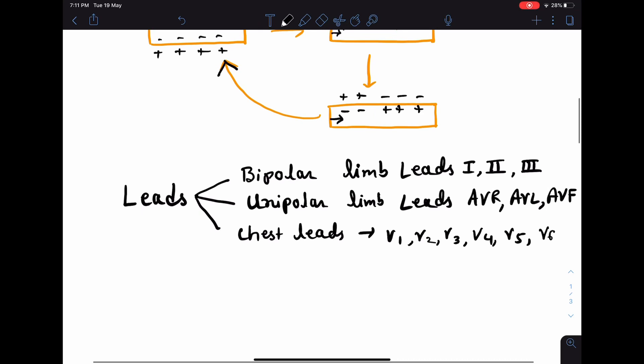Now regarding the leads, there are basically three types of leads. There are two types of limb leads: bipolar and unipolar limb leads. Bipolar limb leads are three, known as lead I, II, and III. Unipolar limb leads are also three. They are known as AVR, AVL, and AVF.